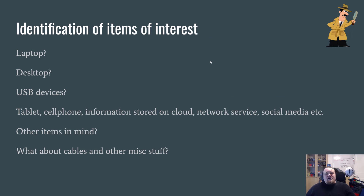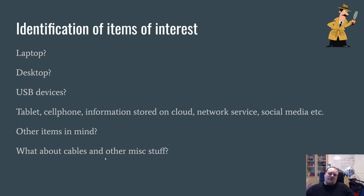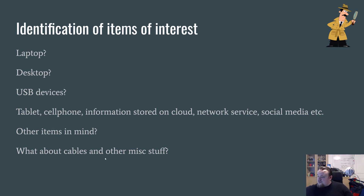Identification of items of interest includes laptops, desktops, USB devices, cables — anything that could have data used in the investigation. Sometimes the last things matter too, like notebooks or post-its. People write things on the back of cups, for example. Use your imagination and cover every angle when collecting items of interest.